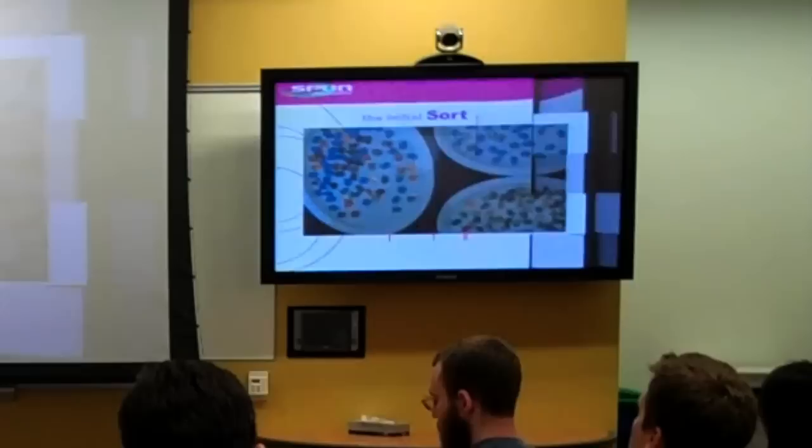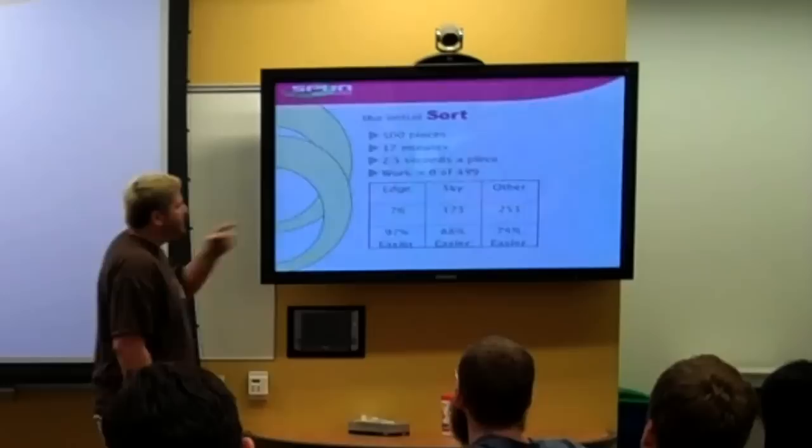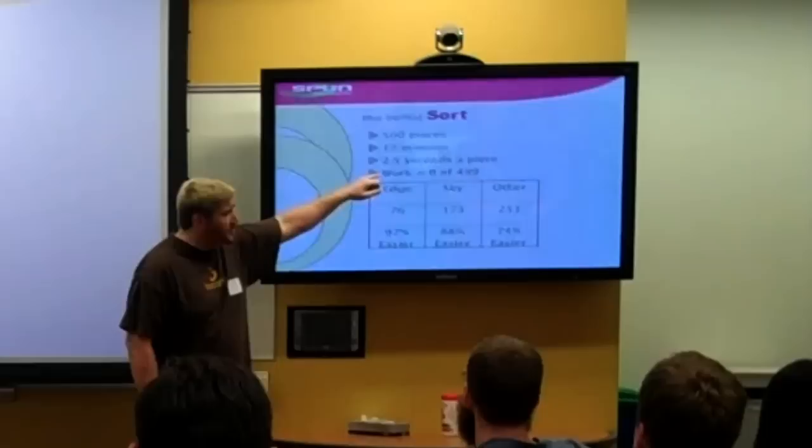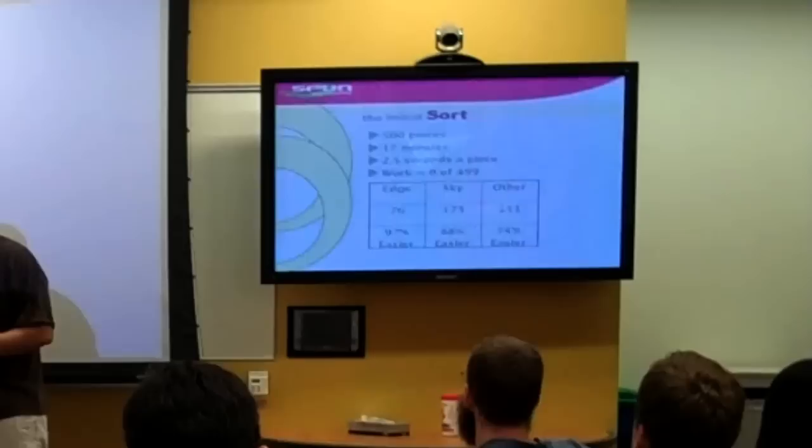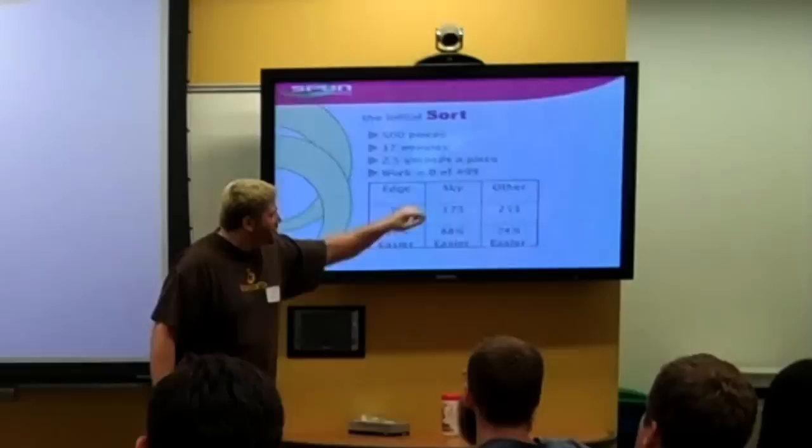So let's take a look at the metrics that are going on here. I have 500 pieces. I sorted them in 17 minutes, which is two and a half seconds a piece. It's about half a second to actually visually sort the piece, and then another two seconds to physically pick it up and put it back down again. And for work, how much work have I done at this point? Zero. I've done no work.